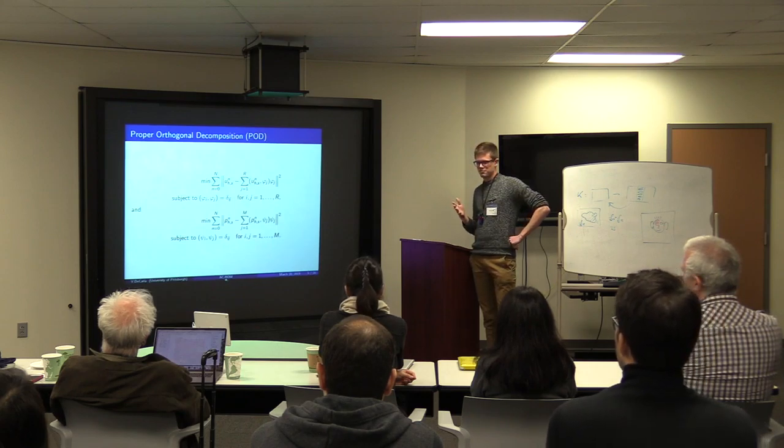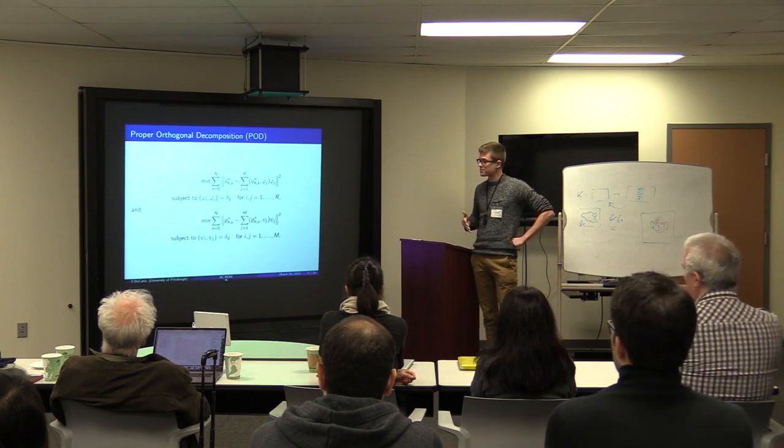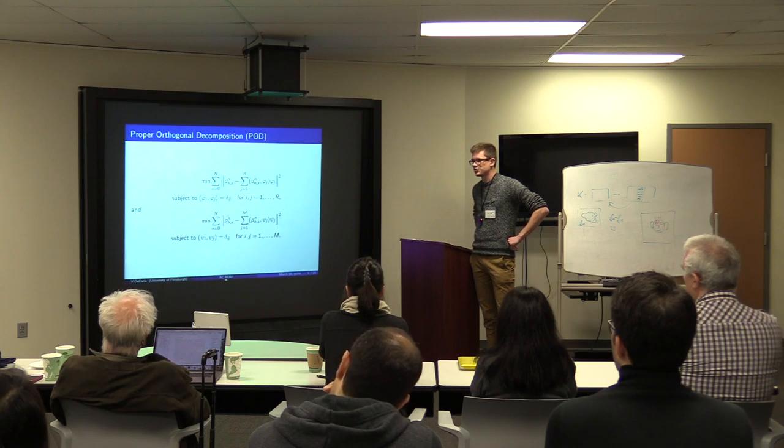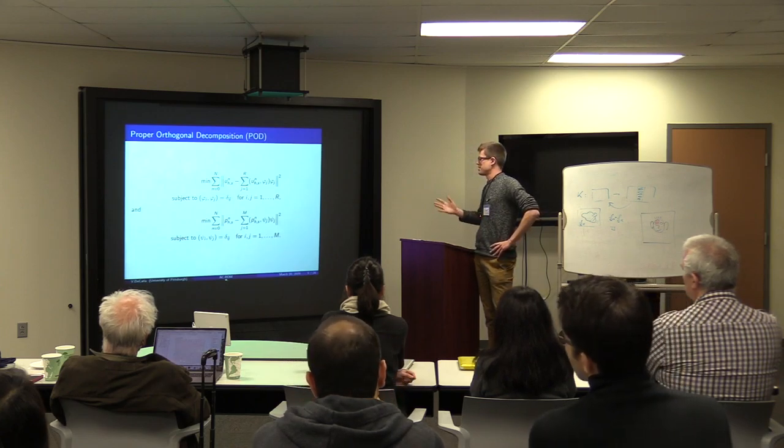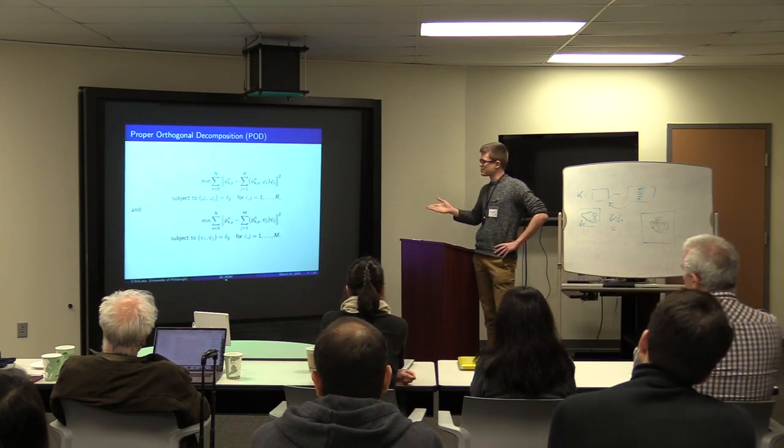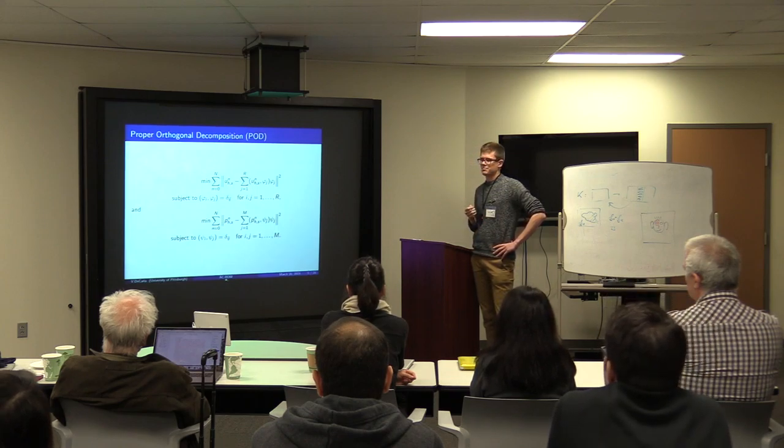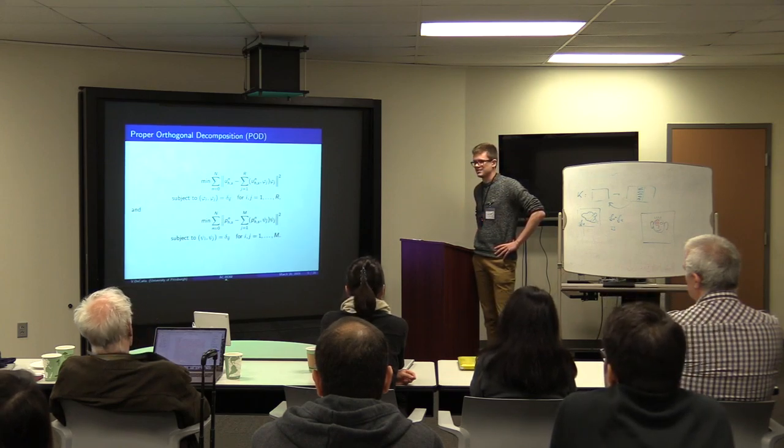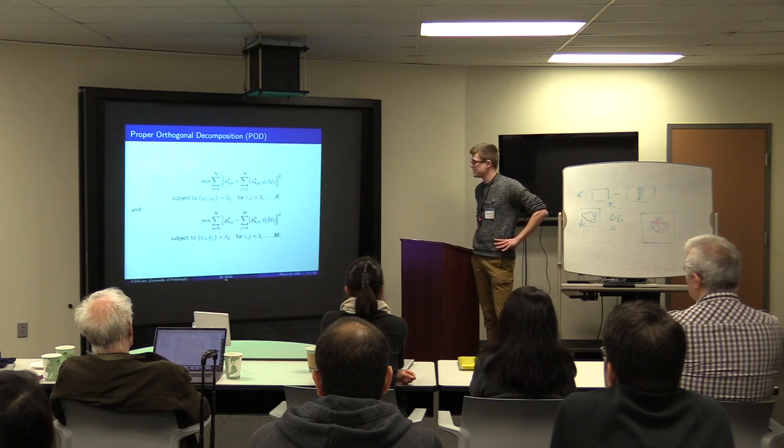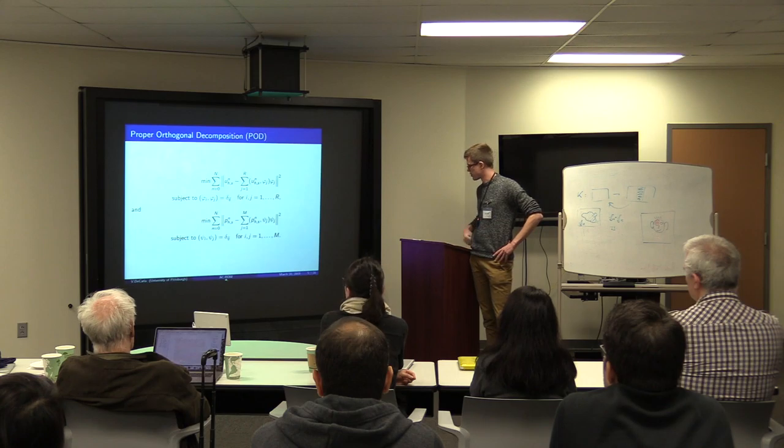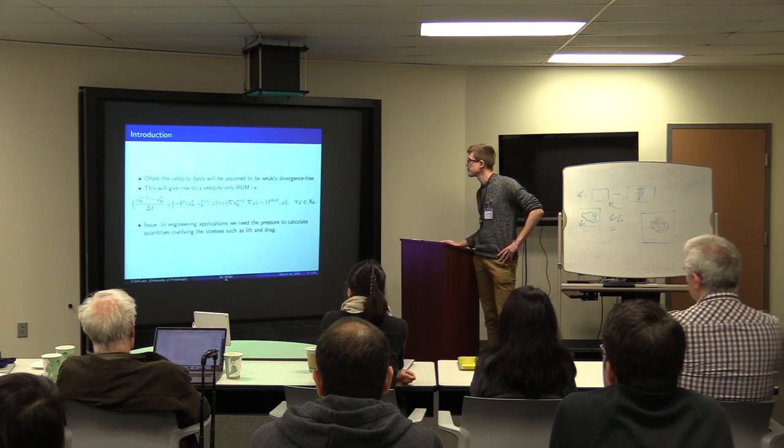So the method that we use to reduce the order is just proper orthogonal decomposition or POD, which here's the minimization problem. It's just a constrained minimization problem subject to the orthogonality conditions. So the resulting basis that we get for both velocity and pressure are going to be orthogonal.